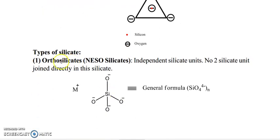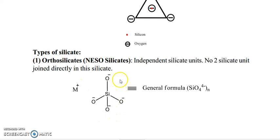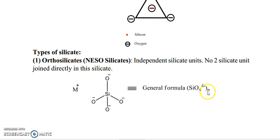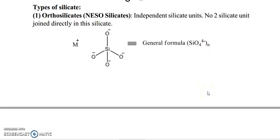First is orthosilicate, also known as nesosilicate. These are independent silicate units — no two silicate units are joined directly. The general formula for orthosilicate is SiO₄⁴⁻, with a 4-minus charge, as you can see in the structure.